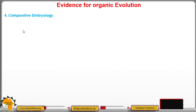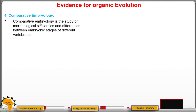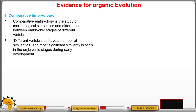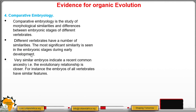The next evidence is called comparative embryology, which is the study of morphological or structural similarities and differences between embryonic stages of different vertebrates. Different vertebrates have a number of similarities, the most significant being seen in the embryonic or early stages of development. Very similar embryos indicate a recent common ancestor. For instance, the embryos of all vertebrates have similar structures like gill slits, a tail, and a two-chambered heart.